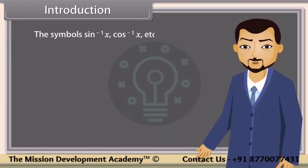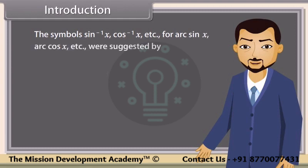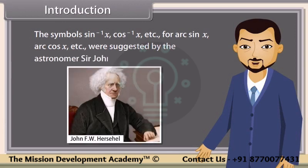The symbols sin⁻¹ x, cos⁻¹ x, etc., for arc sin x, arc cos x, etc., were suggested by the astronomer Sir John F. W. Herschel in 1813. Now let's learn about inverse trigonometric functions.